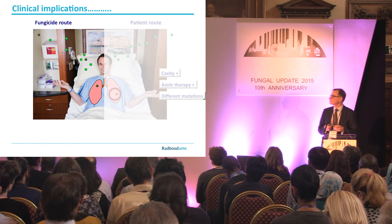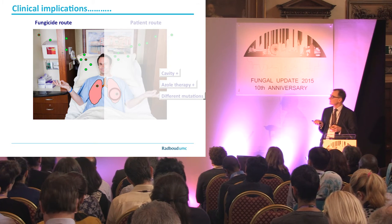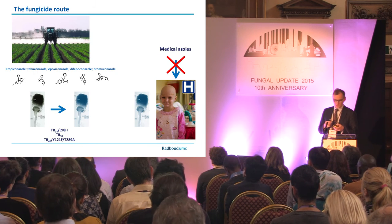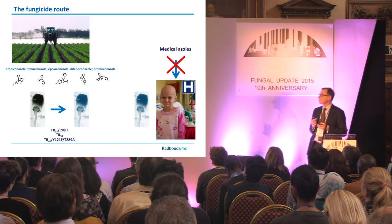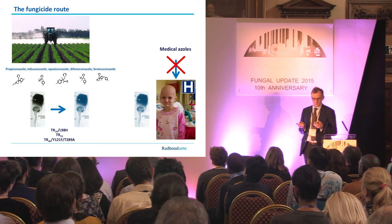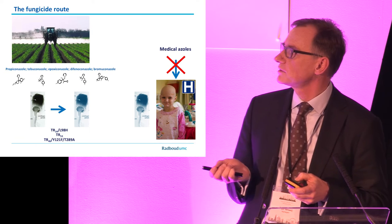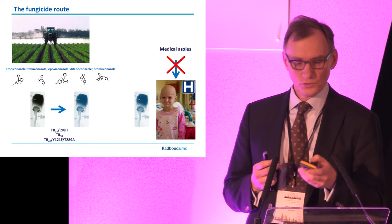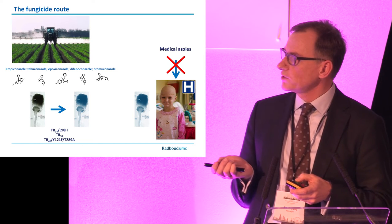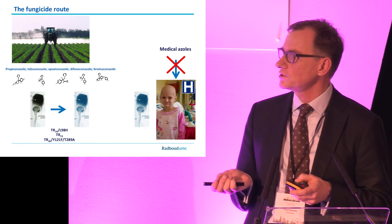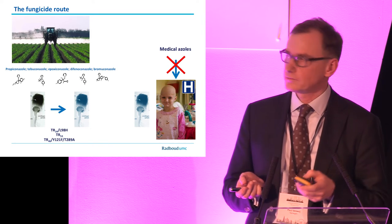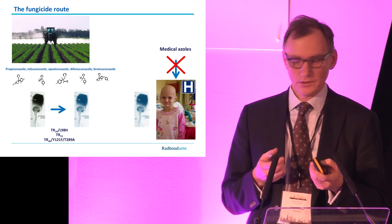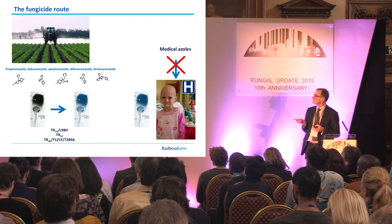The second route is the fungicide route, where already-resistant spores are present in the air and infect the patient. We think this is due to the broad use of azoles outside medicine — one application is in agriculture. Five triazole compounds have been identified that have activity against Aspergillus and are used for various agricultural applications. In the environment, certain mutations occur in Aspergillus fumigatus; the patient inhales these spores and, because these agricultural azoles are molecularly very similar to medical azoles, the medical azoles no longer work.